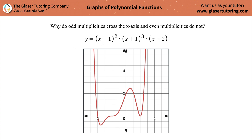So first I have a function here and this is the output on a graph. There are three locations where this function will cross or touch the x-axis — it touches it here, it also touches it at this location roughly, and it also touches it here. Now if you notice, there are two spots where it actually crosses the x-axis, and at this location it does touch the x-axis but it doesn't cross it.